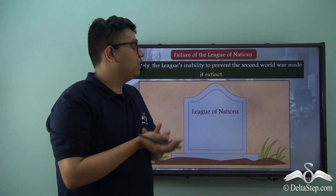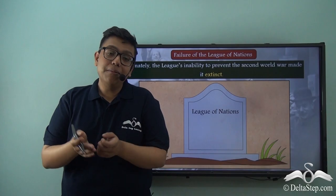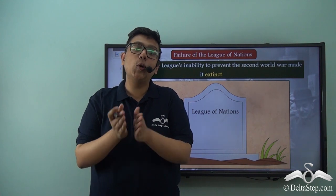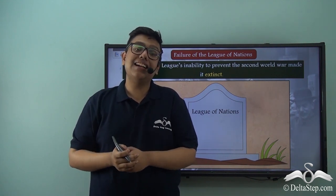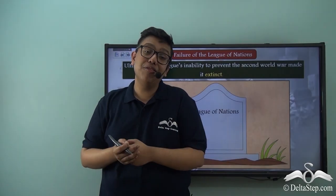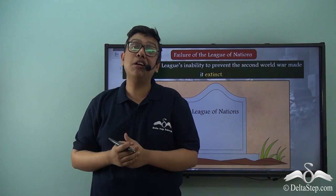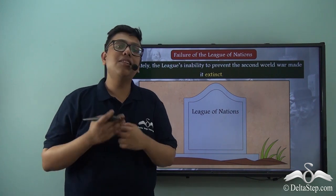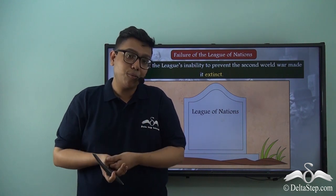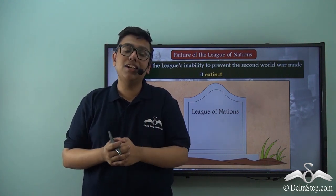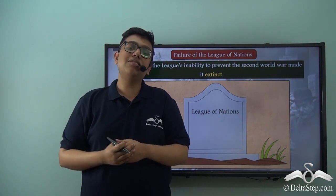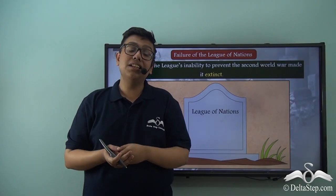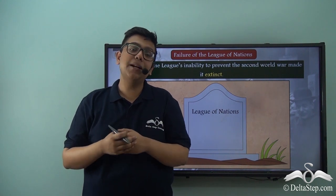Ultimately the League of Nations failed in its very core purpose. The purpose of the League of Nations was to prevent any sort of global conflict or world war from occurring again. However, the League failed the very day the Second World War broke out and it could do nothing about it. The League's inability to prevent the Second World War made it go extinct. When the Second World War broke out, the League did not conduct a single meeting of its members. The members had already realized the League was now a lifeless body waiting to die, and it stayed put till the war was over.